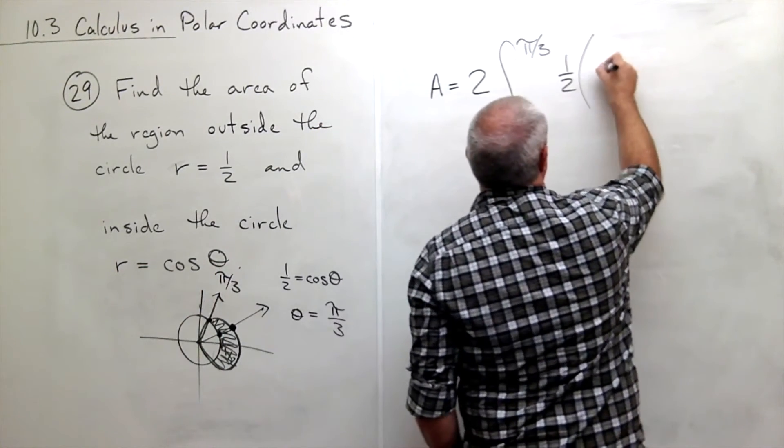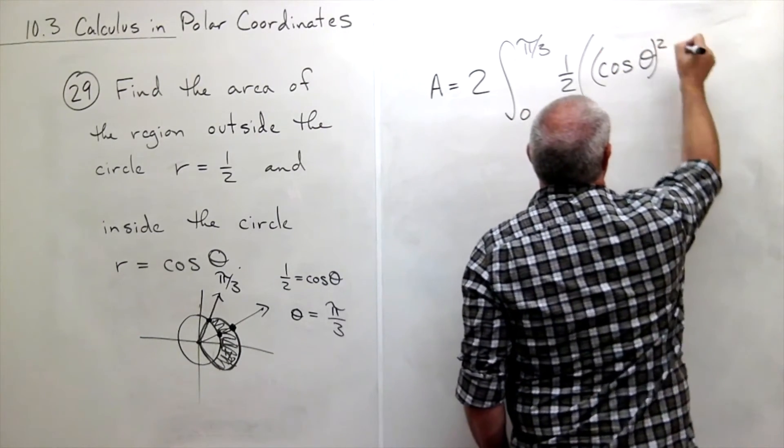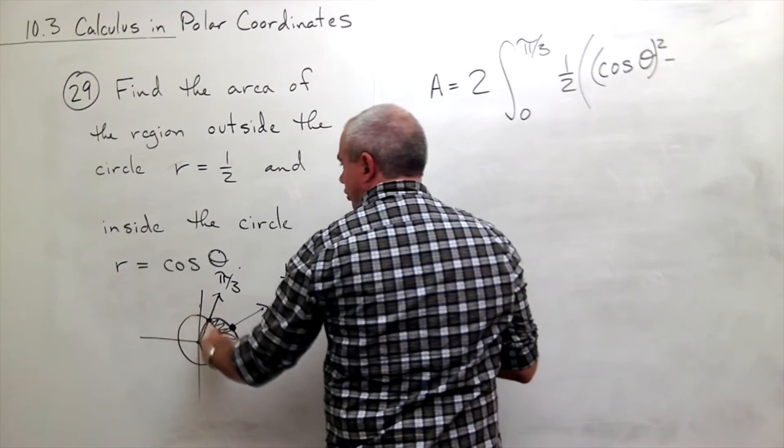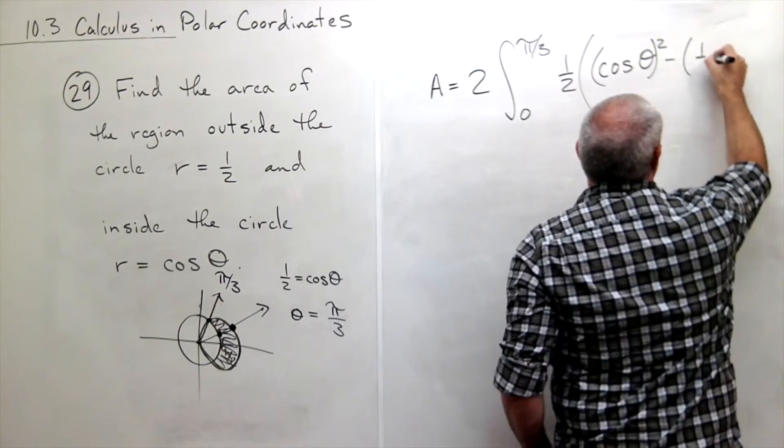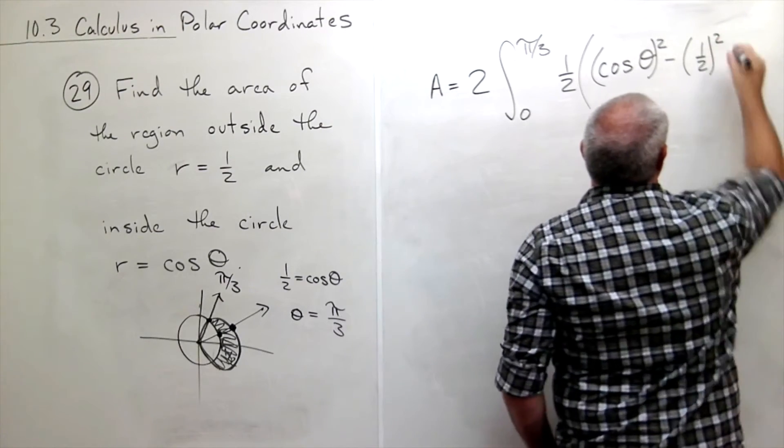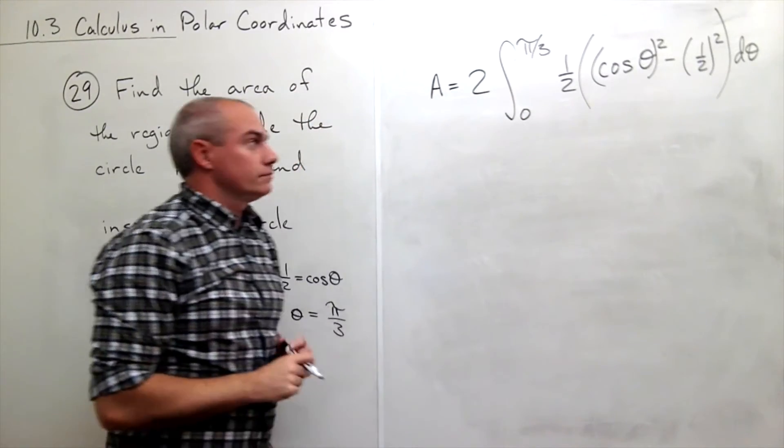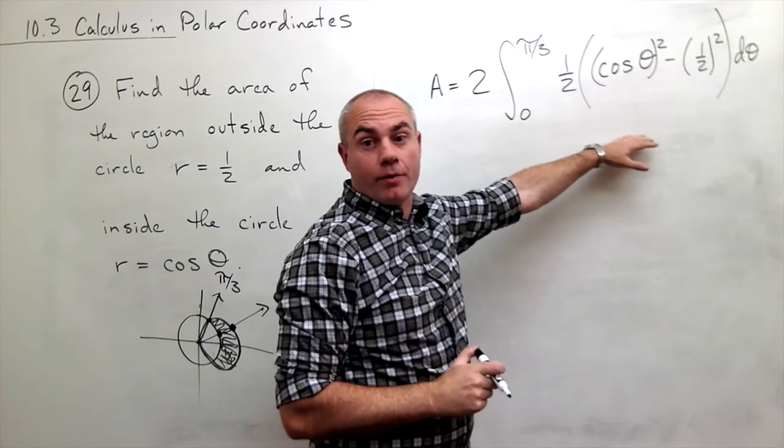So I get that cosine of theta quantity squared minus that inner function. But the inner function in this case is a half, one-half squared, all of that d theta. So this is the integral that will get the job done for me.